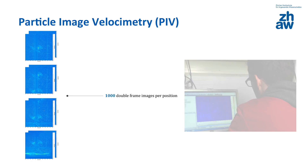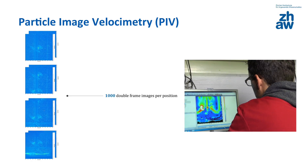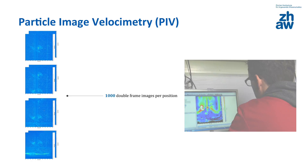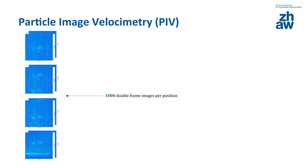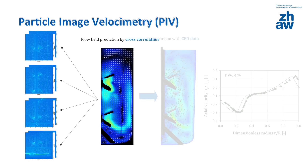After collecting the data, the coordinates of each measurement position are combined and the fluid flow pattern is calculated. This is based on an interrogation window of 32 by 32 pixels and cross-correlation of the double-frame images.